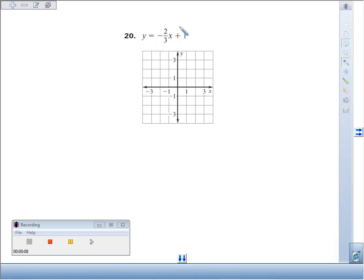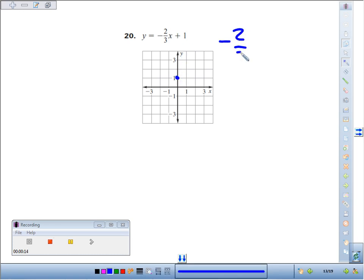We have y by itself, so we want to recognize that our y-intercept, the number by itself, is one. We mark it on the y-axis at one. The slope is negative two-thirds.